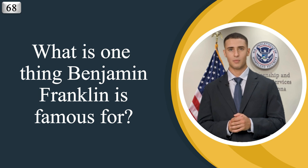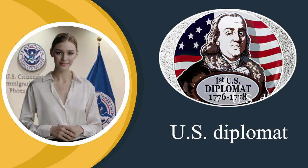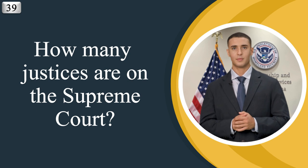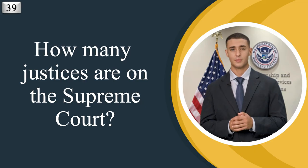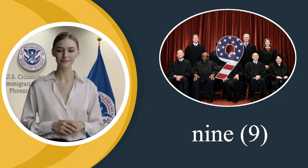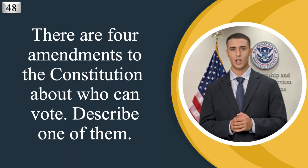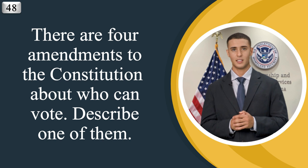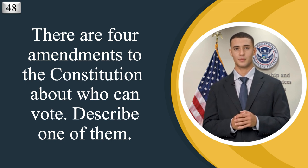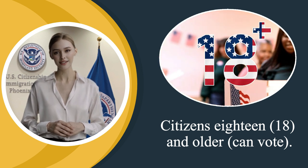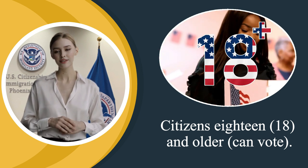What is one thing Benjamin Franklin is famous for? U.S. Diplomat. How many justices are on the Supreme Court? Nine. There are four amendments to the Constitution about who can vote — describe one of them. Citizens 18 and older can vote.